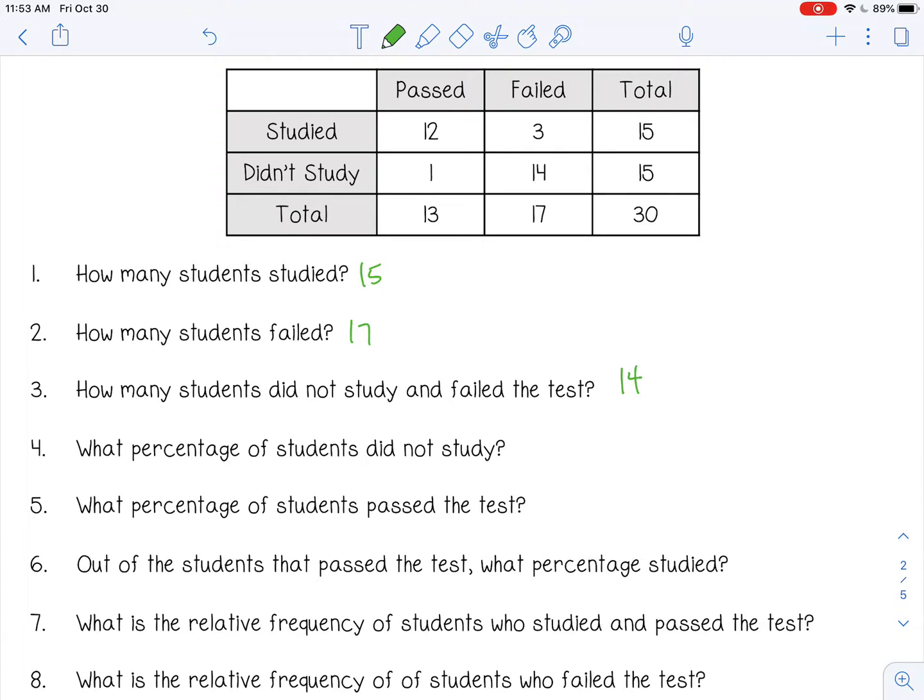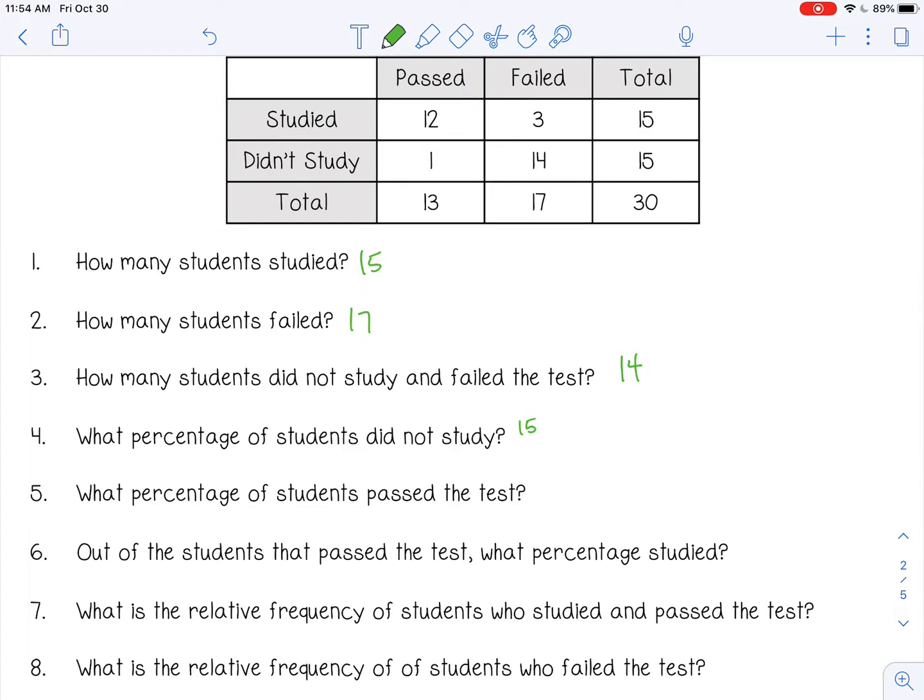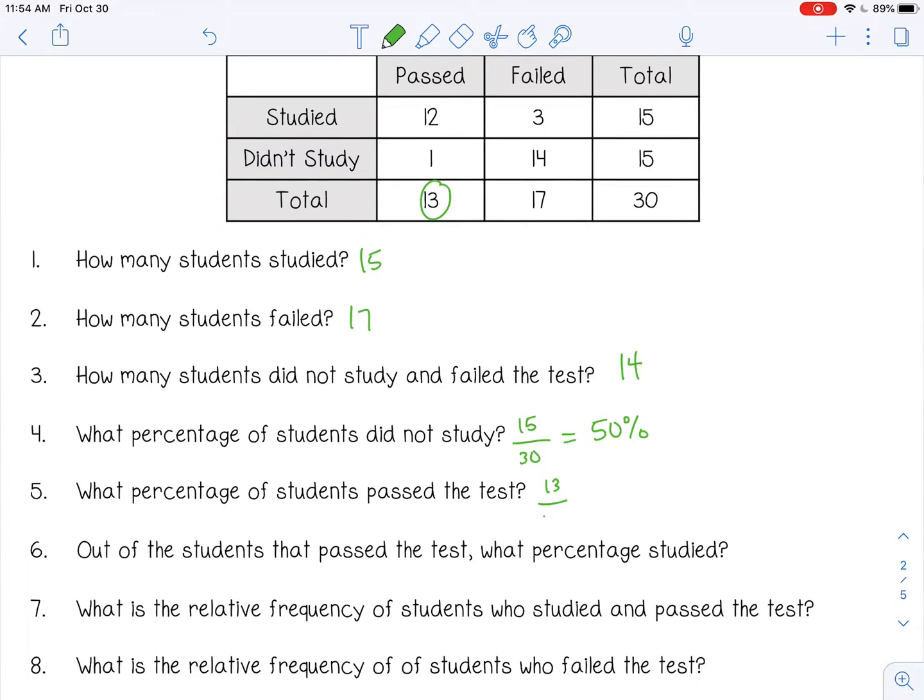What percentage of students did not study? 15 did not study out of 30 total students, so that would be one half or 50%. What percentage of students passed the test? So 13 passed out of 30 students. I'm going to divide 13 by 30 and I get 0.43 or 43%.